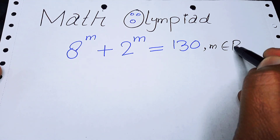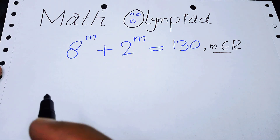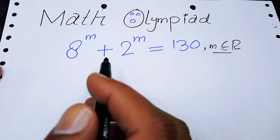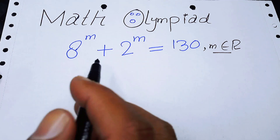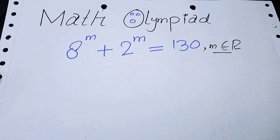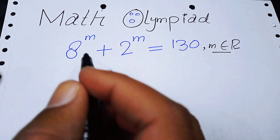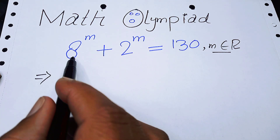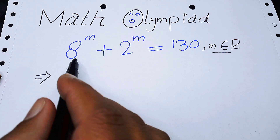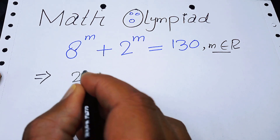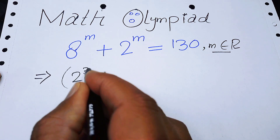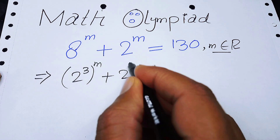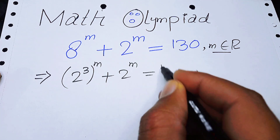Here m must belong to the reals, so we find only real solutions. The very first thing we do is focus on the left hand side — we have 8, and we can write this 8 as 2 to the power of 3. So the expression becomes 2 to the power of 3, whole power m, plus 2 to the power of m, is equal to 130.